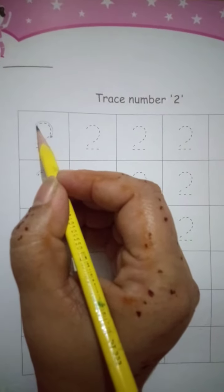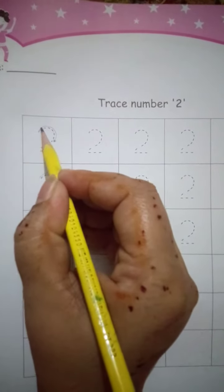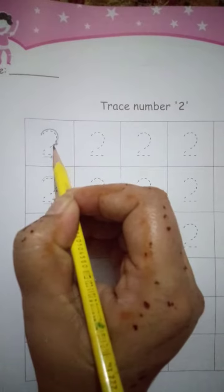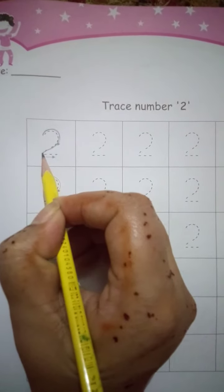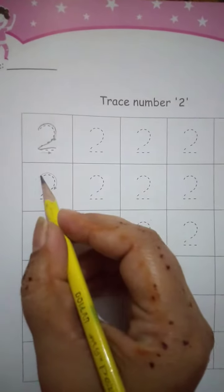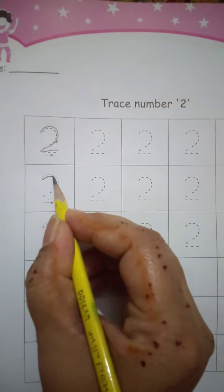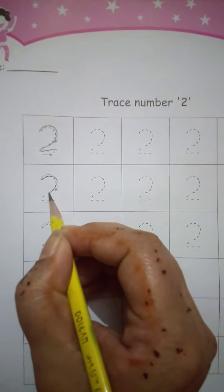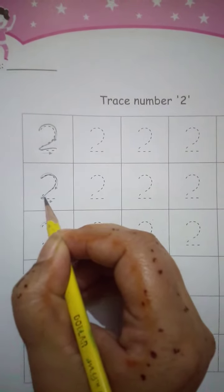Number book, page number 32. Our number is 2. We have to trace 2 and color these objects. How many objects are these? 1 and 2. This is 2. On page number 32, we will do tracing and writing of 2.